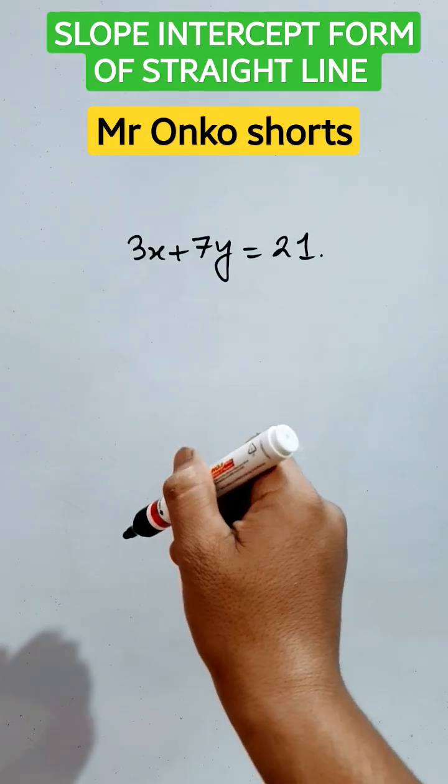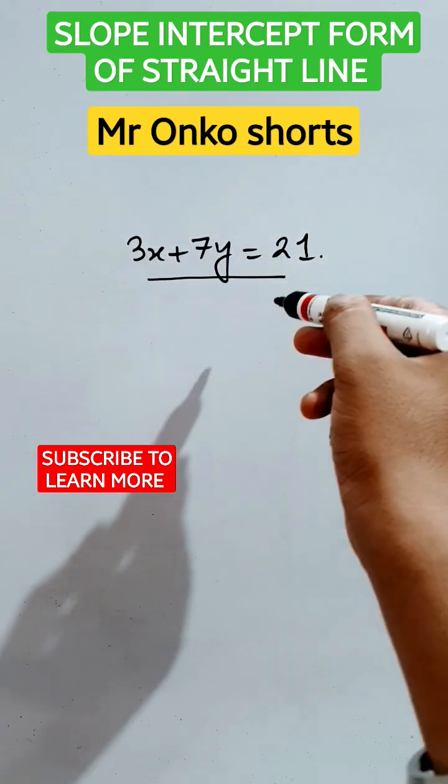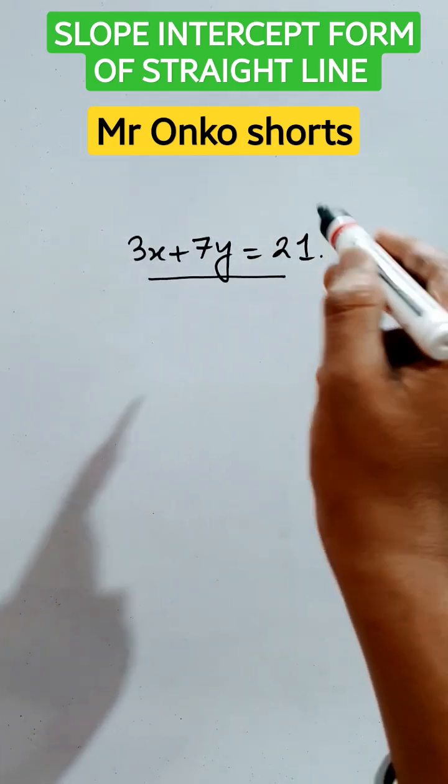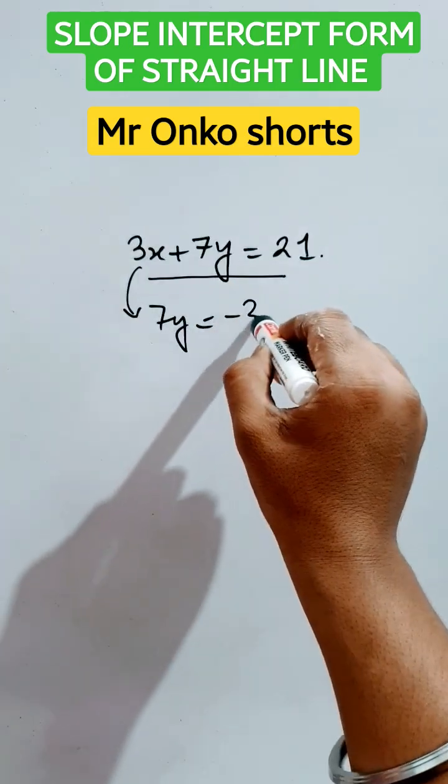Hello guys, welcome to Mr. Onko shorts. Today we will learn how to convert this type of given linear equation into slope intercept form of a straight line. First, keep 7y on the left side and then bring -3x + 21.